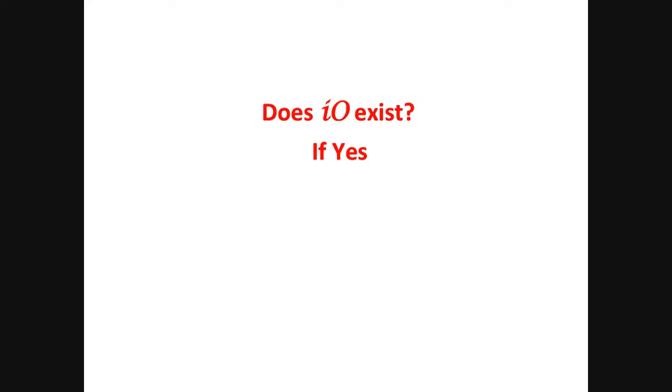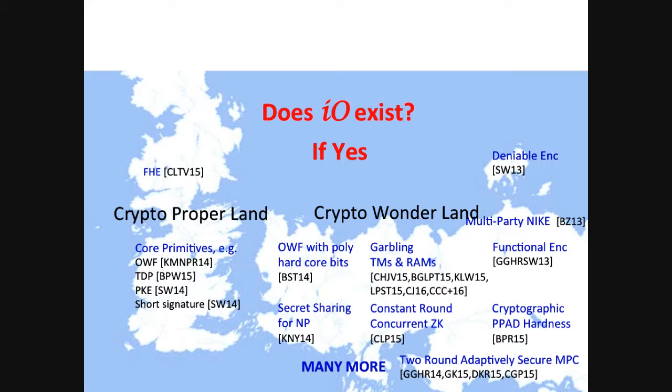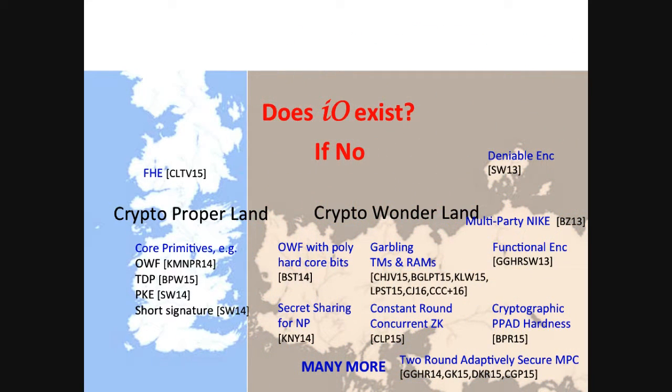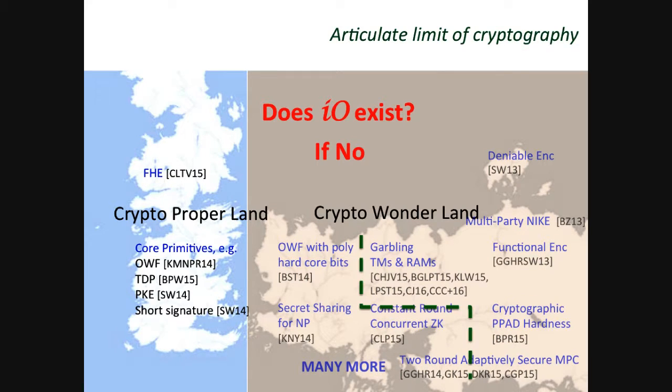But if the answer is yes, this amazing land is the world that we live in, and we should just continue to expand the limit of crypto. And if IO does not exist, then the map reverts back to before, and all those new primitives we constructed will fall back into a limbo. But then at the very least, we should go primitive by primitive to figure out what is the exact border of feasibility. So answering this question is important.